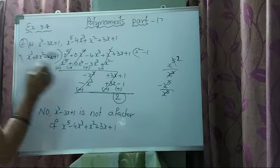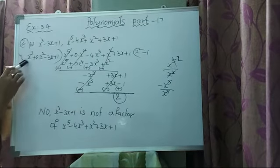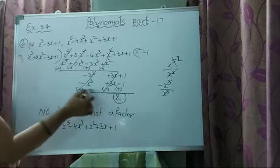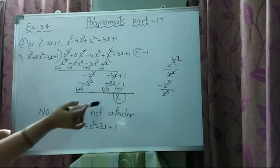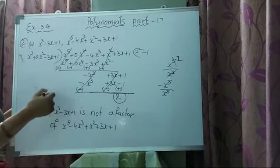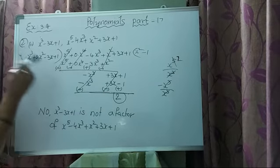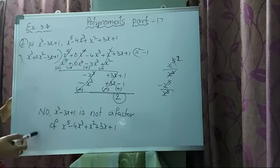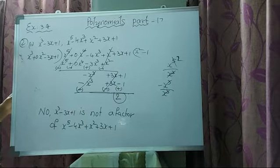This is how we find out whether it is a factor. If you get 0, it is a factor. If you get 2 or some variable terms as remainder, it is not a factor.